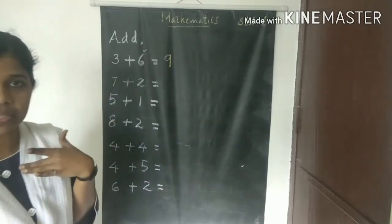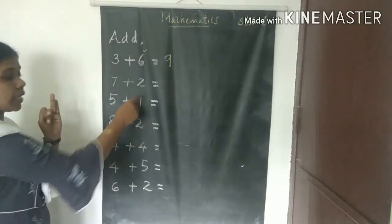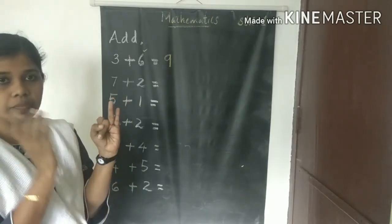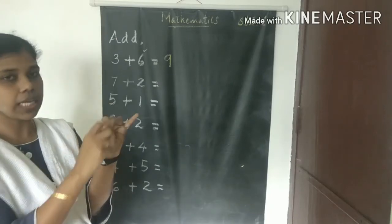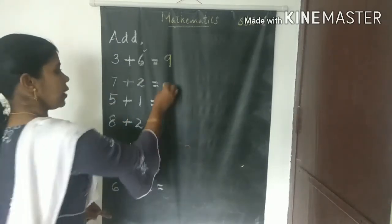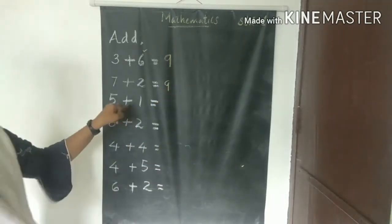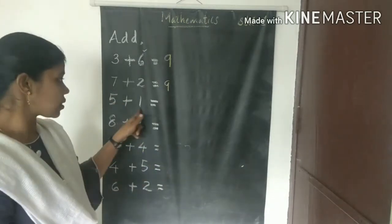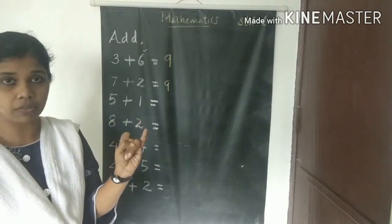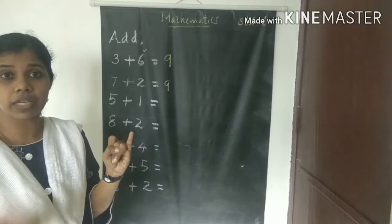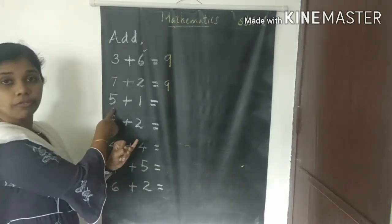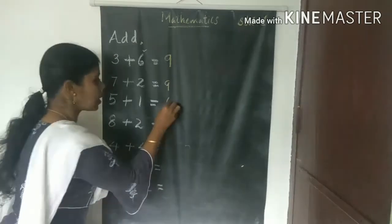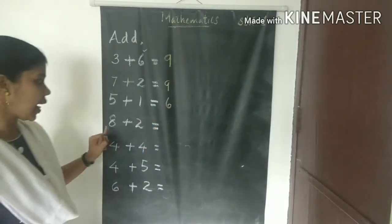Since we add numbers in any order, three plus six and six plus three always give the same answer — so we can take either number first, no problem. Next: seven plus two. The bigger number is seven, keep it in your mind; take two fingers in your hand. Seven, then: eight, nine — answer is nine. Next: five plus one. Five is bigger, keep in mind. Any number plus one equals just the after-number of that number. After five is six — answer is six.